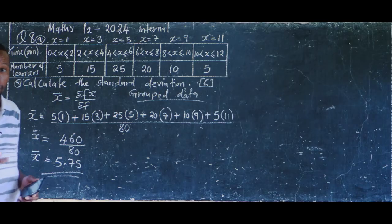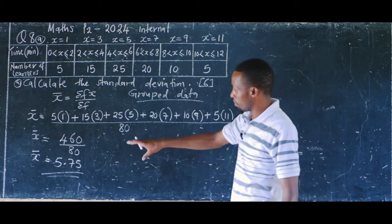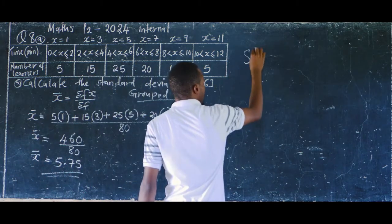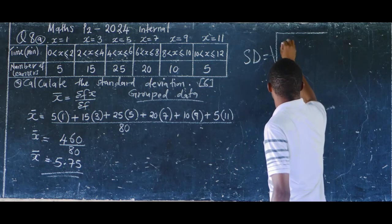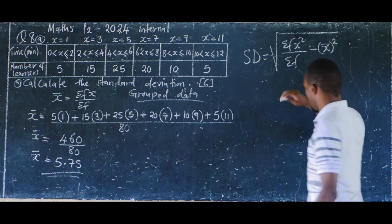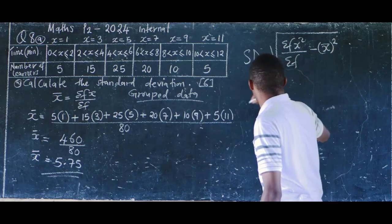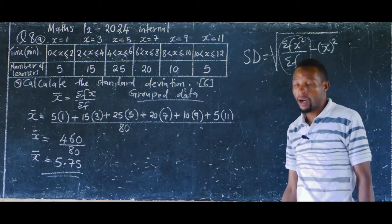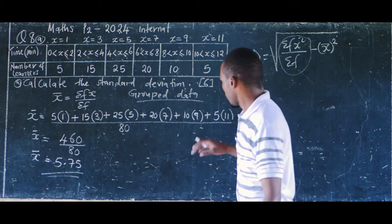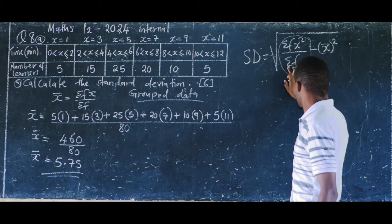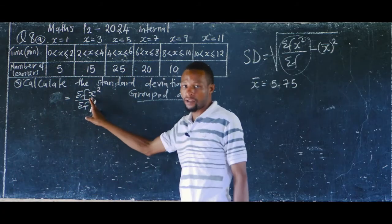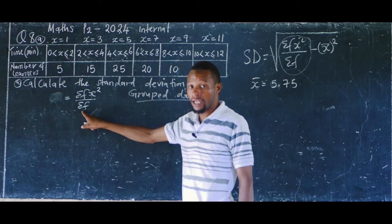After finding x-bar, the next step uses the standard deviation formula: square root of (summation fx² over summation f) minus x-bar squared. After finding the mean, we now need to find the part: summation fx² over summation f. We'll calculate it separately, then substitute into the formula.